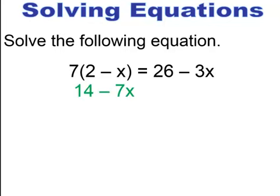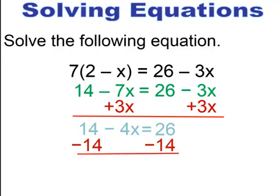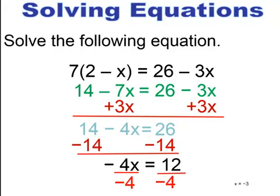Do the distributive property to get 14 minus 7x equals 26 minus 3x. It doesn't matter which direction you choose to move to get the variables together. Move the 3x over to the 7x, ending up with 14 minus 4x equals 26. Subtract 14 from both sides to get negative 4x equals 12, then divide through by negative 4 to get x equals negative 3.